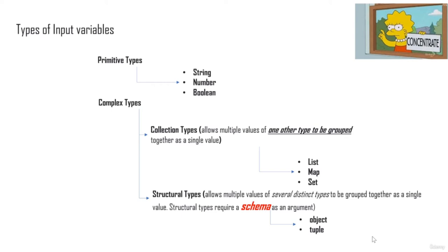There are three kinds of primitive input variables: string, number, and boolean. Apart from these, there are complex types — collection types (list, map, set) and structural types. Use collection types when you want to group multiple values of the same type together. Use structural types when you want to group multiple values of several distinct types together. An important distinction: structural types require a schema, whereas collection types do not.